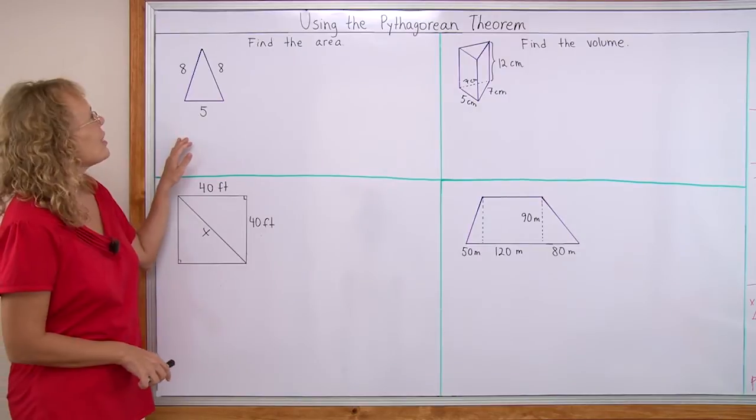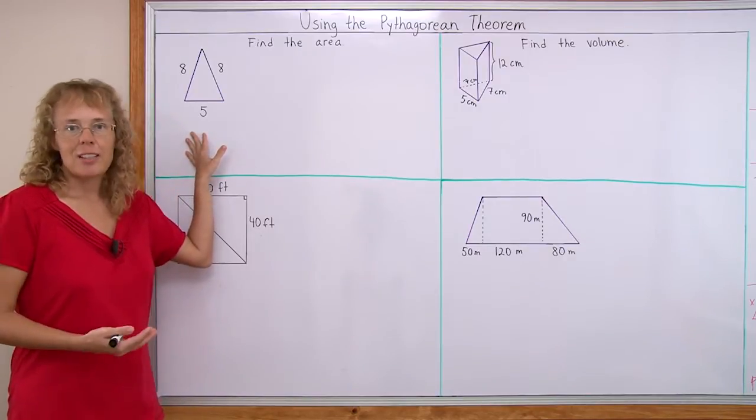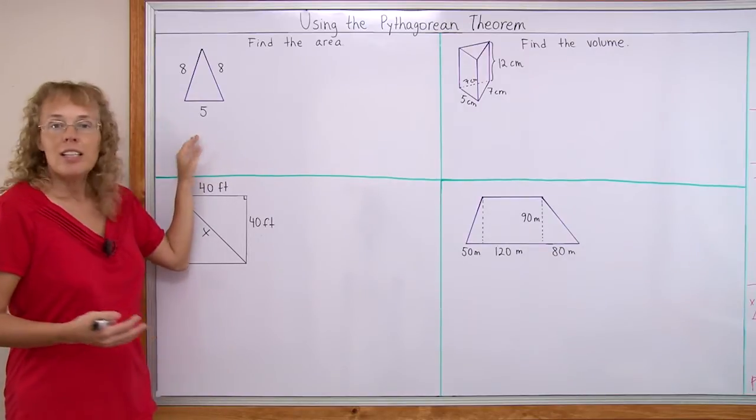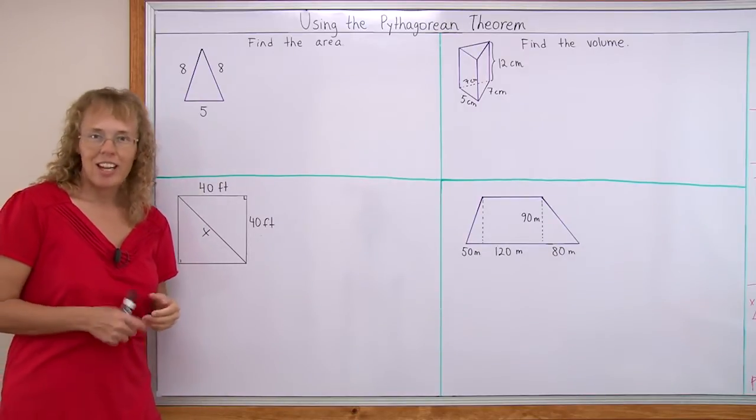My first example is find the area of this triangle. Now notice it has 8 and 8 as side lengths and then 5. So this means it's an isosceles triangle.